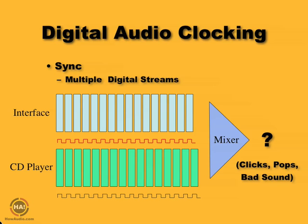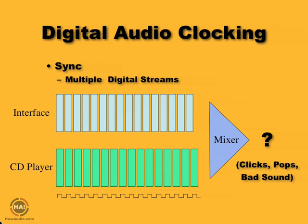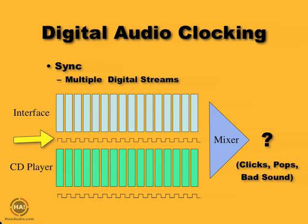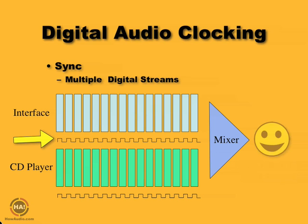What we need to do is get rid of the clock in our interface and replace it with the clock from the CD player. We'll take the clock from the CD player and feed it into our interface, reclocking our samples at the exact same rate as the CD player. We'll use the CD player's clock to play back our samples, which makes them perfectly aligned in time. Then when the mixer goes to mix those two together, we've got good sound.